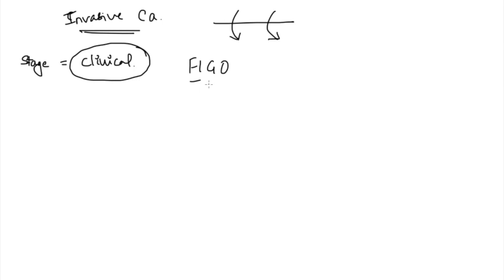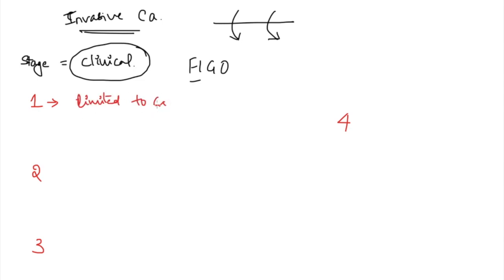The staging system used is the FIGO classification - Federation of International Gynecologists and Obstetricians. There are four stages. Stage 1: carcinoma is limited to the cervix. Stage 2: it has spread beyond the cervix.